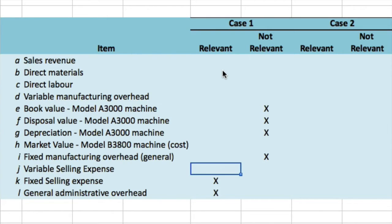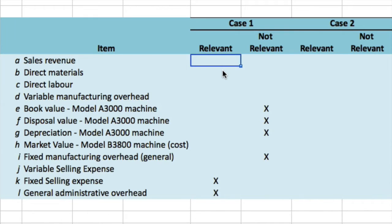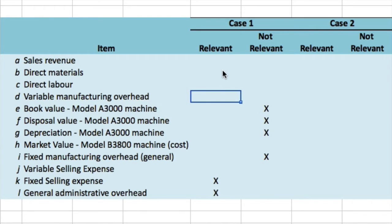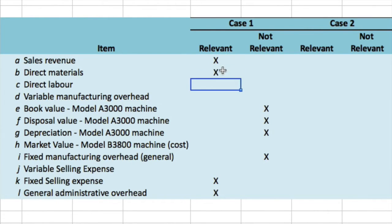We've taken care of all costs that are either sunk or will be the same under both scenarios. We might be tempted to say everything else must be relevant. When we add the new B3800 machine, it's going to increase volume, production, and sales — so we'll have incremental differential benefits and differential costs. We have sales revenue, direct materials, direct labor, and variable manufacturing overhead. If we increase production by even one unit, all variable expenses associated with that unit will also increase.